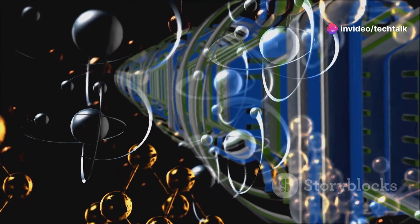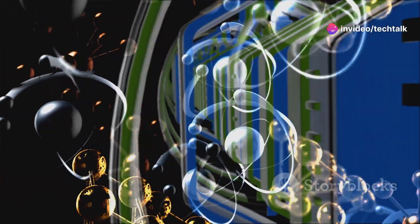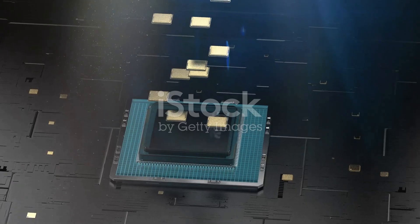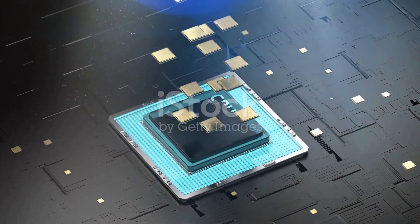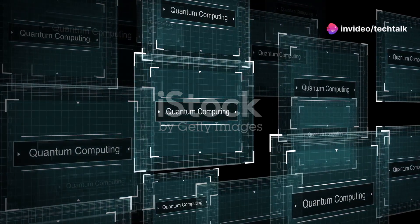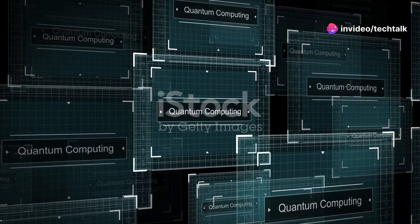Unlike classical computers that use bits as the smallest unit of data, quantum computers use quantum bits, or qubits. It's a fundamentally different way of processing information. While classical bits can be either zero or one, qubits can be both at the same time, thanks to a property called superposition.